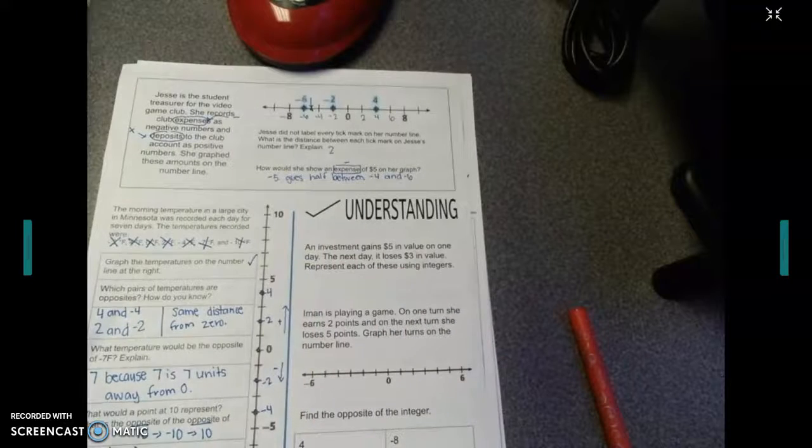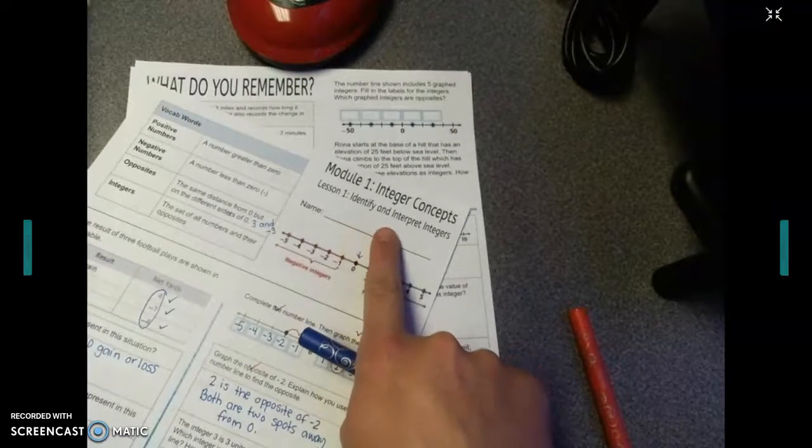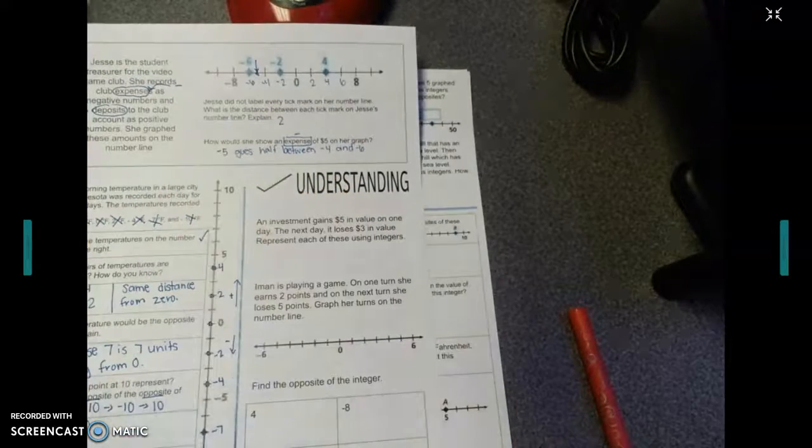Okay, this is called Check Understanding. We're still in Module 1, Lesson 1, Identify and Interpret Integers, and we're on the back side. For Check Understanding, let's see what you remember how to do first.